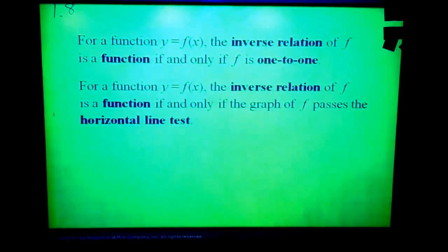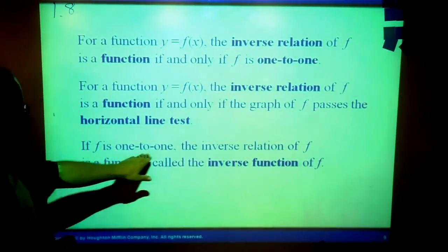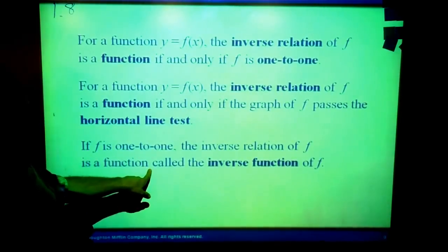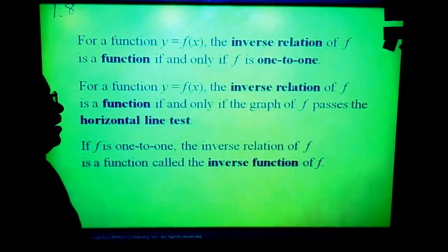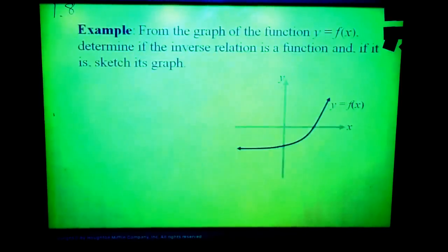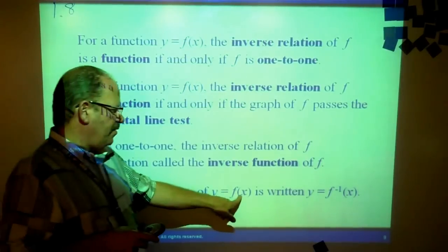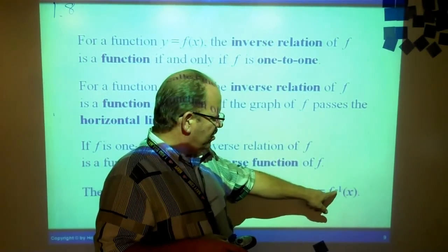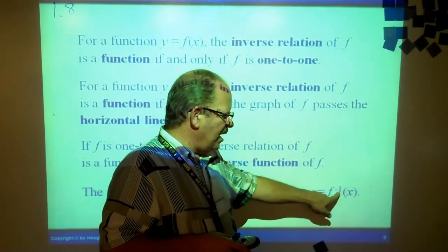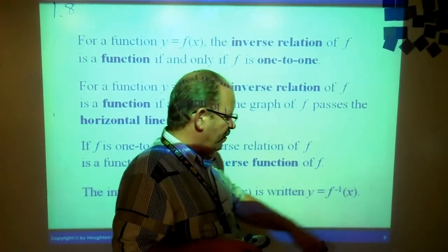Again, if f is one-to-one, the inverse of it is the inverse function, it's a function. If it's one-to-one. If it's not one-to-one, then it's an inverse relation. Let's go back and look at the way we write f inverse. The inverse function of y equals f(x) is written f inverse of x. This is not used in the same way as you've used it before. This simply means the inverse function of x.